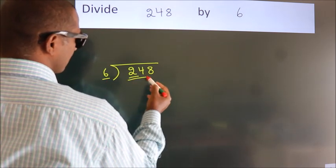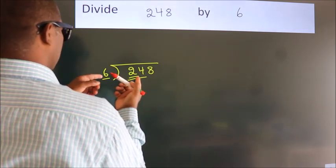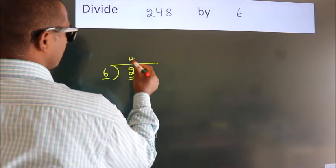...should take two numbers: 24. When do we get 24 in the 6 table? 6 times 4 is 24.